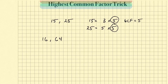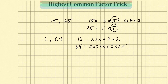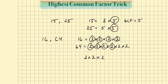The next one: 16 and 64. We're going to say 16 equals 4 times 4, which is 2 times 2 times 2 times 2. And 64 is 8 times 8 — 8 is 2 times 2 times 2, and another 8 is 2 times 2 times 2. Then we match them one for one: we have four pairs of 2s. So we're going to say our greatest common factor is 16.